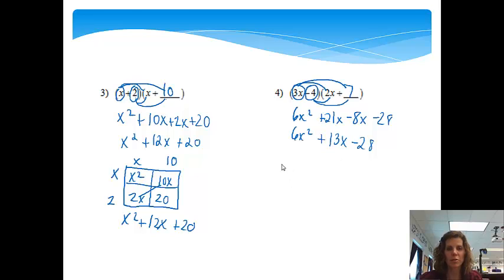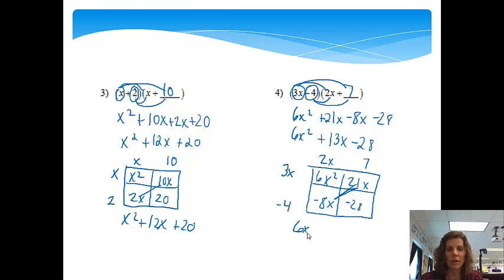If you were to choose to do the rectangular method on this one, we've got 3x. I do have to put a negative 4 there. And then a 2x and a 7. And then here, 3x times 2x will be 6x². 3x times 7 is 21x. Negative 4 times 2x is negative 8x. Negative 4 times 7 is negative 28. And then again, we've got like terms to combine. I've got 6x² plus 13x minus 28. And notice again, I got the same answer. So now hopefully you are somewhat familiar with multiplying polynomials.